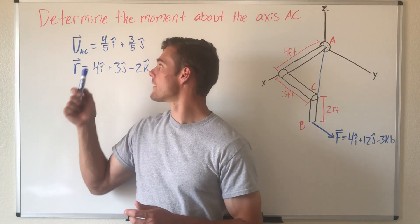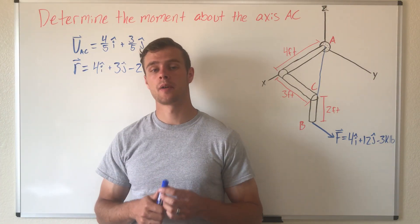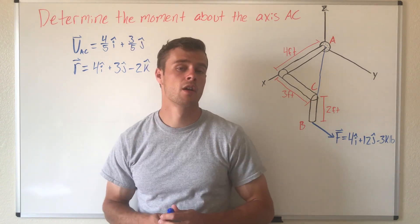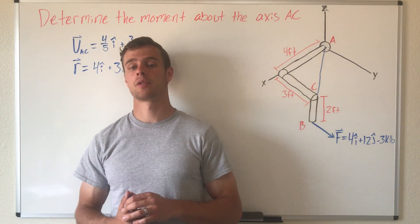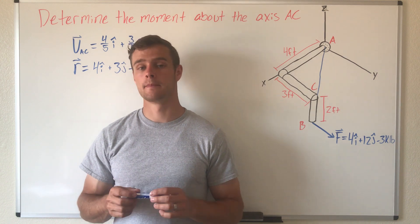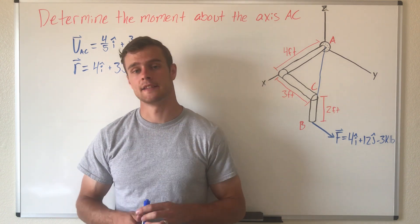Alright guys, so now that we have our unit vector and our moment arm vector and we also have our force vector, we can take the triple scalar product and find the magnitude of our moment about the line AC.